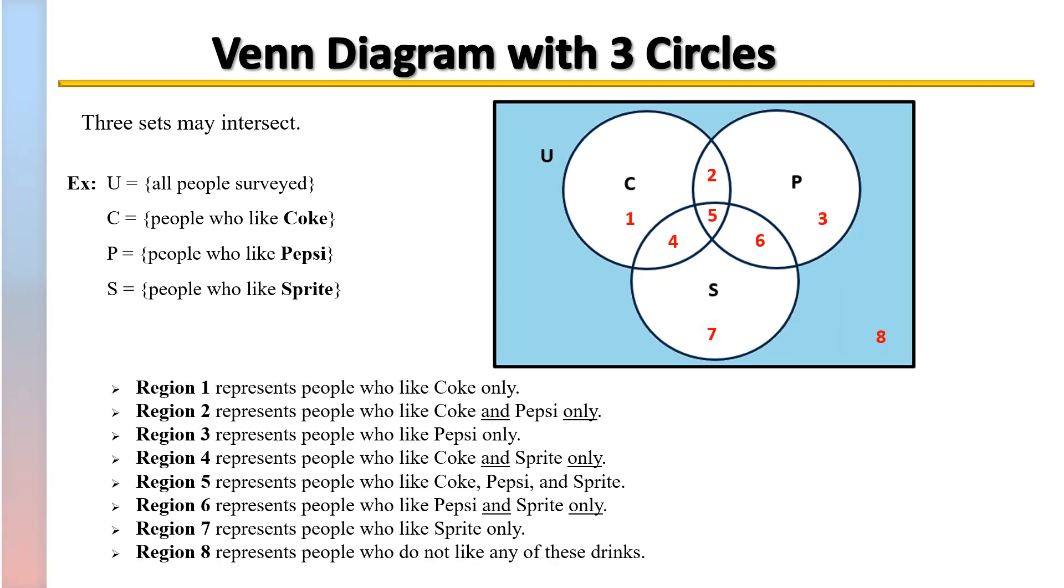Lastly, we have Region 8. Region 8 represents those people that they surveyed who didn't like any of those three choices. They would prefer none. That is the region that is outside of those given sets.